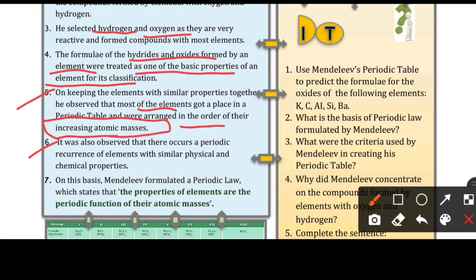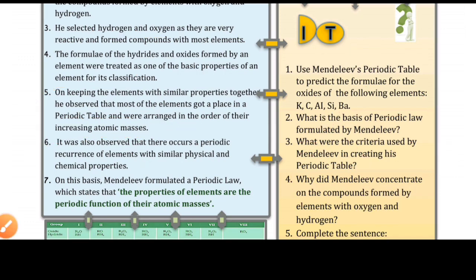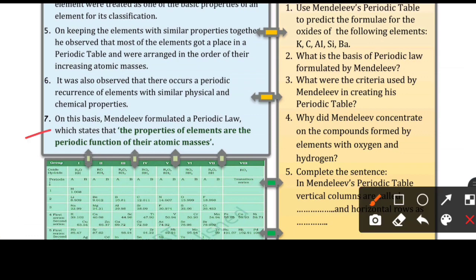Looking at the periodic table for reoccurrence: hydrogen has atomic number 1 and lithium has atomic number 3 — both have only one electron in the outermost shell. When sodium comes at atomic number 11, its outermost shell also has one electron. This reoccurrence led to Mendeleev's Periodic Law: the properties of elements are a periodic function of their atomic masses.